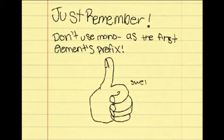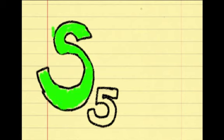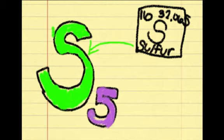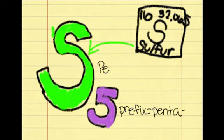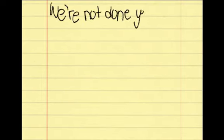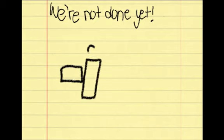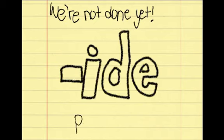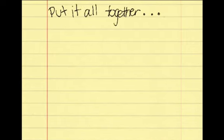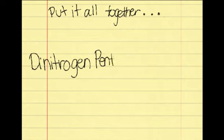We will now name the second part of our compound, S5. The S is the symbol for the element sulfur, which is number 16 on the periodic table. The prefix for 5 is 'penta.' Put it together and it's 'pentasulfur.' But we're not done yet — on the end of the last element, you change the ending to 'ide.' So if we put this all together, we get 'pentasulfide.' Put it all together, and you get dinitrogen pentasulfide.